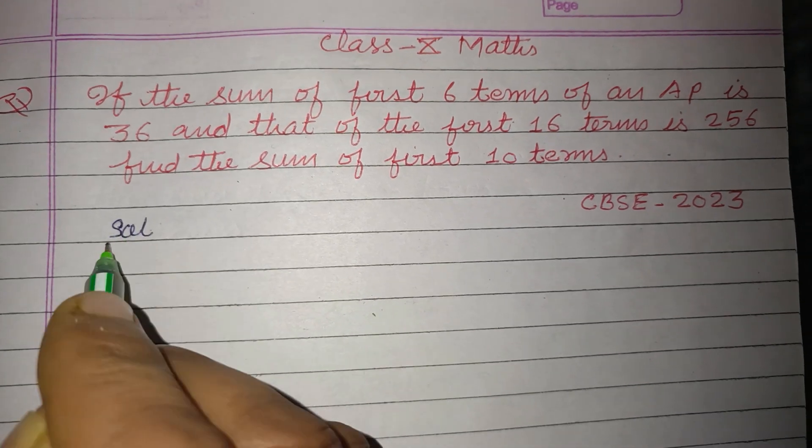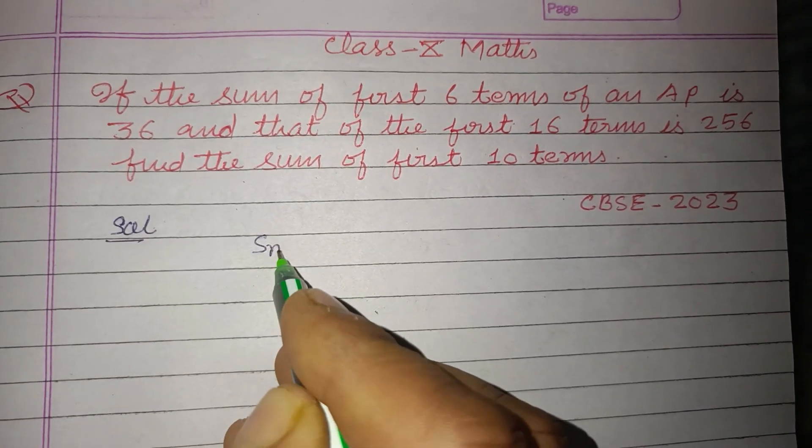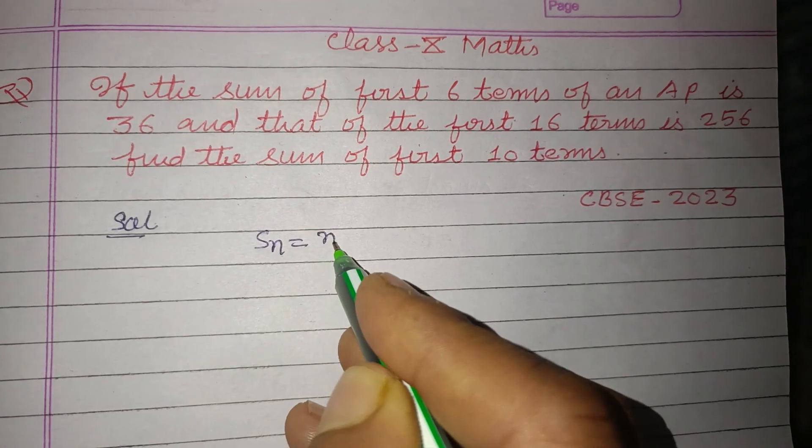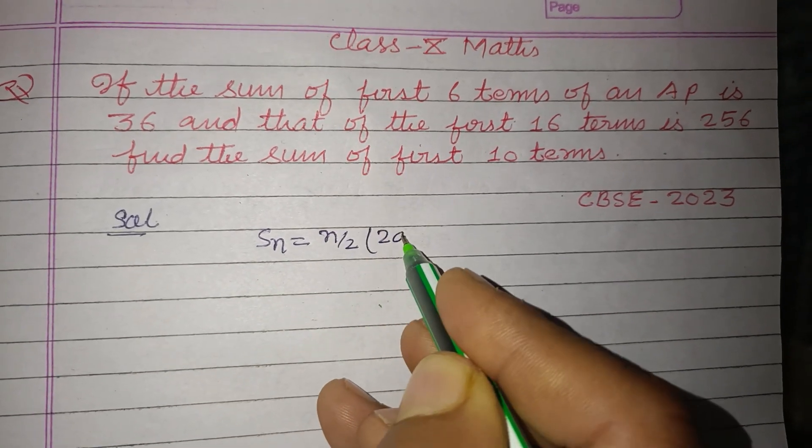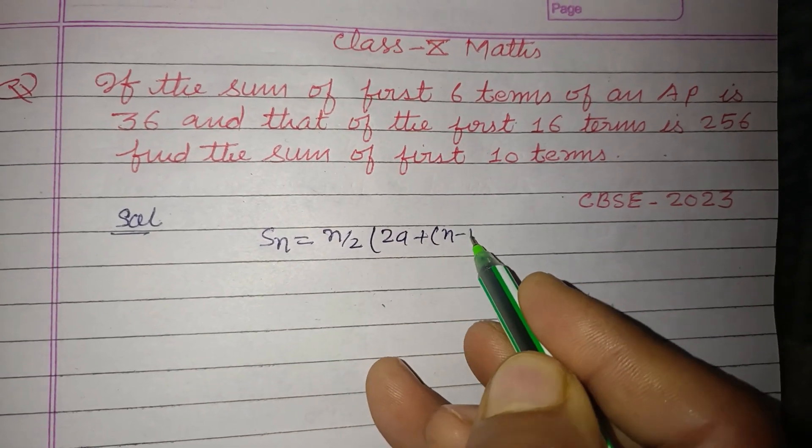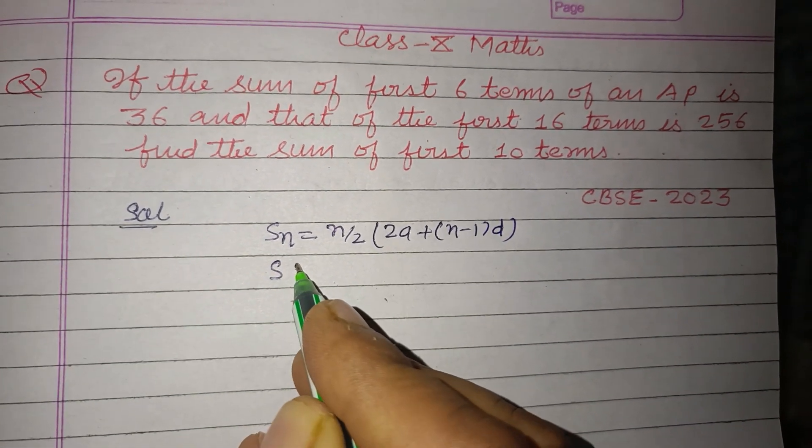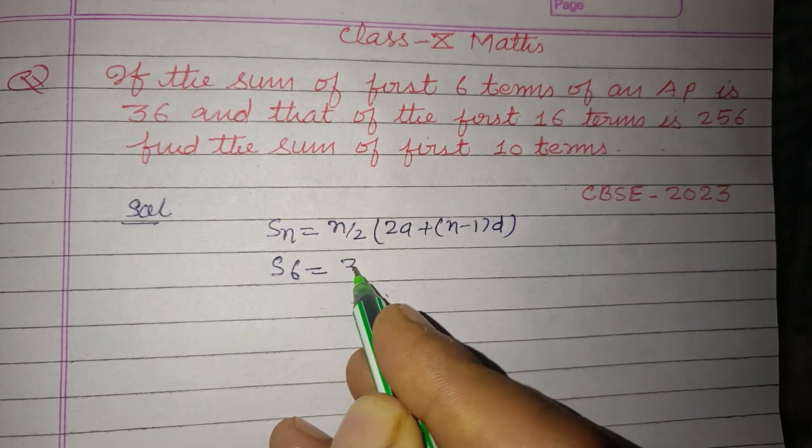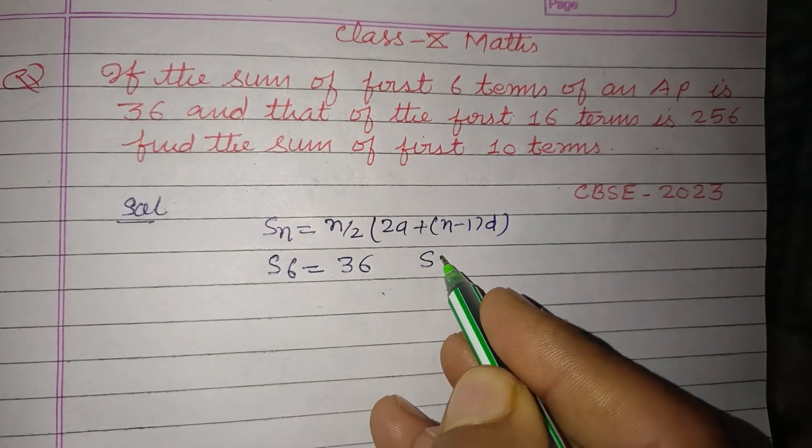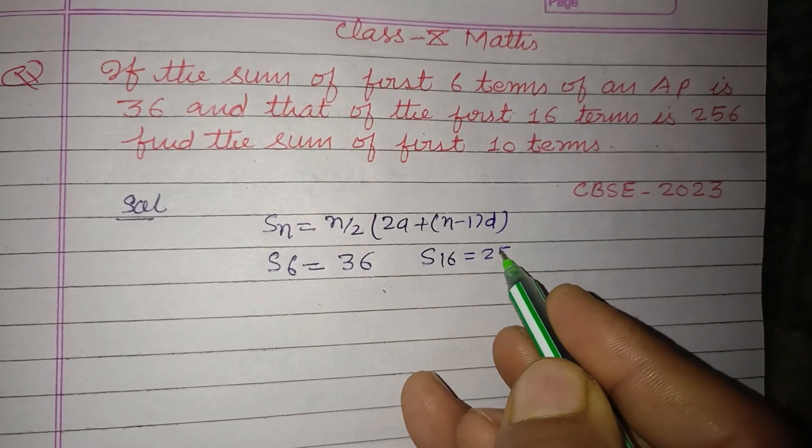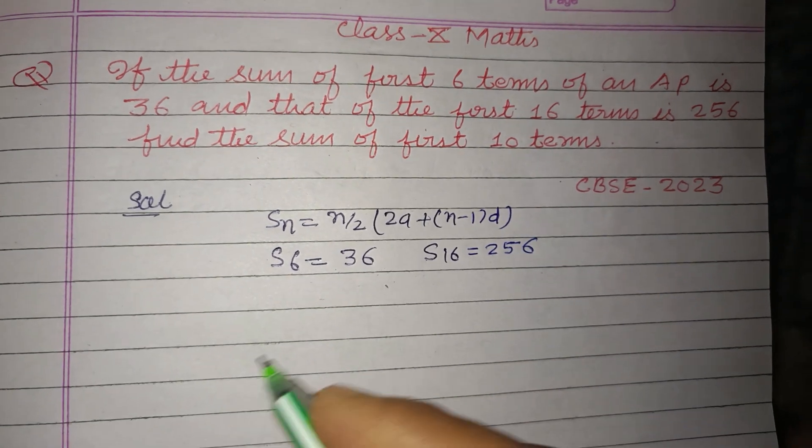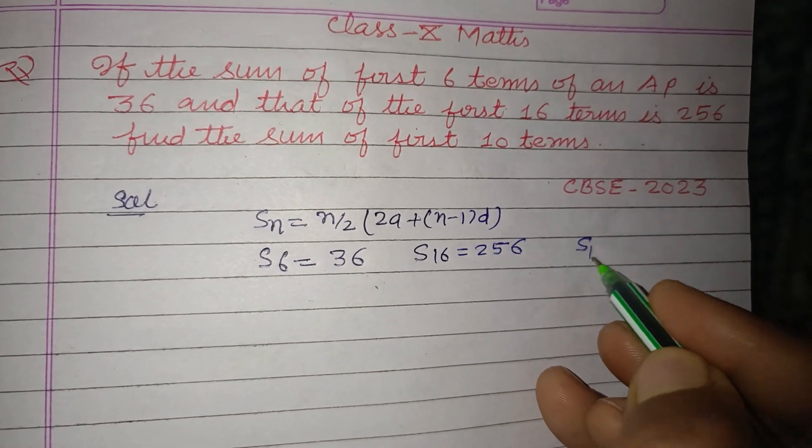So students, here sum of n terms is given by formula S_n equal to n/2(2a + (n-1)d). Here it is given that S_6 is 36, S_16 is 256, and we require S_10.